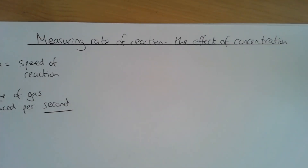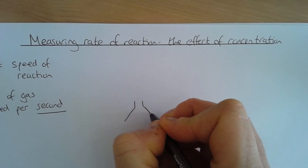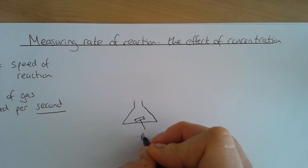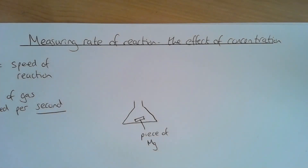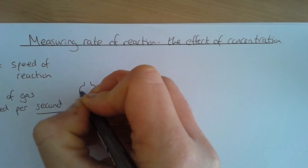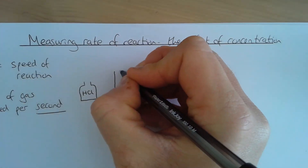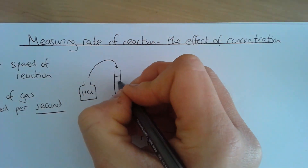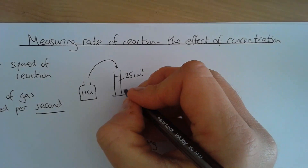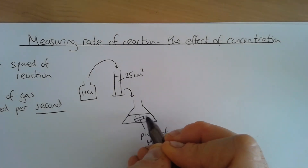So let's have a look at the actual experiment. This is an experiment we are going to do when we get back to work. We take a conical flask and into that conical flask we put a piece of magnesium ribbon, and then we would need to measure out a set volume of hydrochloric acid — 25 cm³ of HCl in our measuring cylinder — which is then put into our conical flask. That reaction produces hydrogen gas.